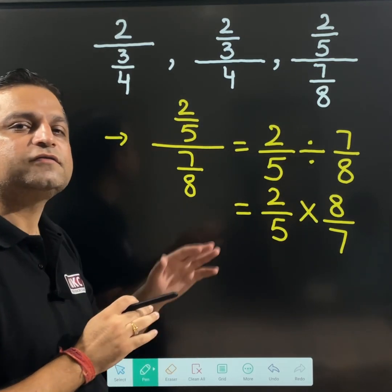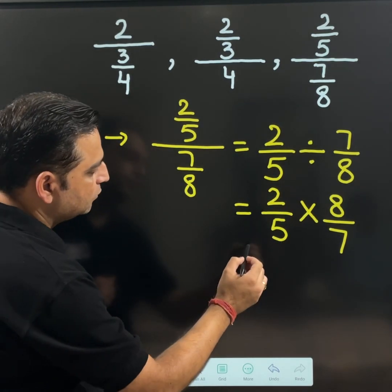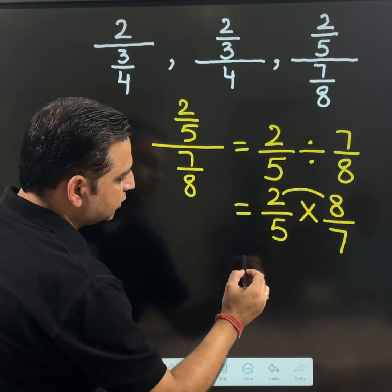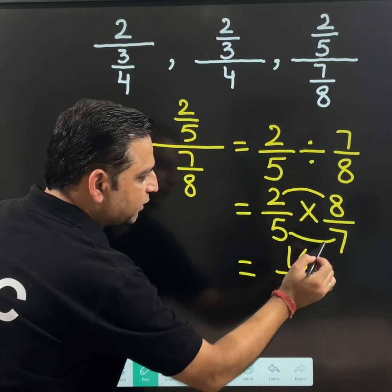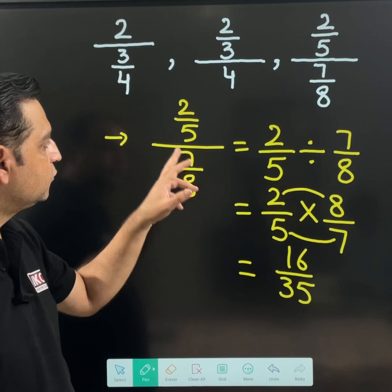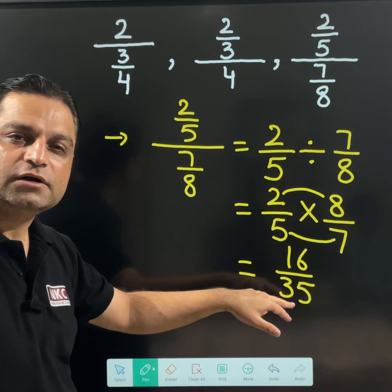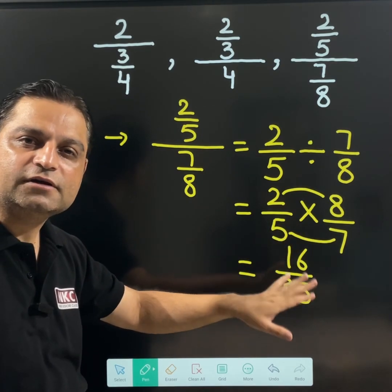Instead of 7 over 8 just write 8 upon 7. Now see what is happening. 2 is being multiplied with 8, I am getting 16. In the denominator 5 is multiplied by 7, I am getting 35. For this question 16 upon 35 is the answer. I hope all are clear with the basic concept behind it.